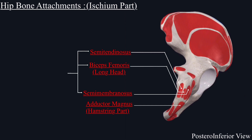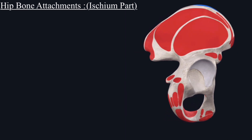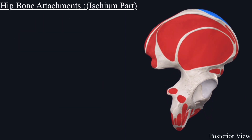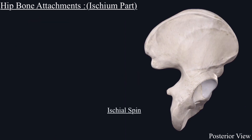These three are the posterior compartment of the thigh muscles. Slightly lateral to the ischial tuberosity originates the quadratus femoris muscle, and from the upper aspect of the ischial tuberosity originates the inferior gemellus muscle.